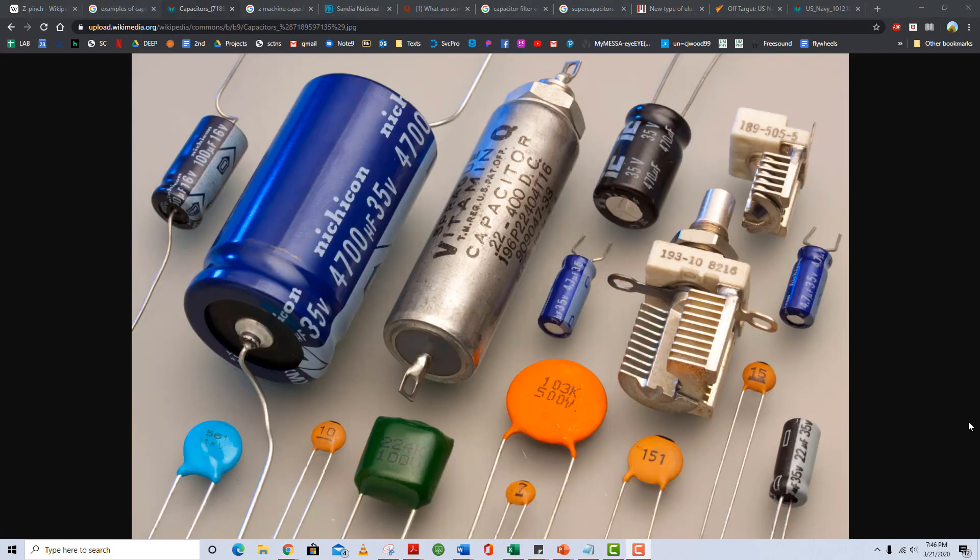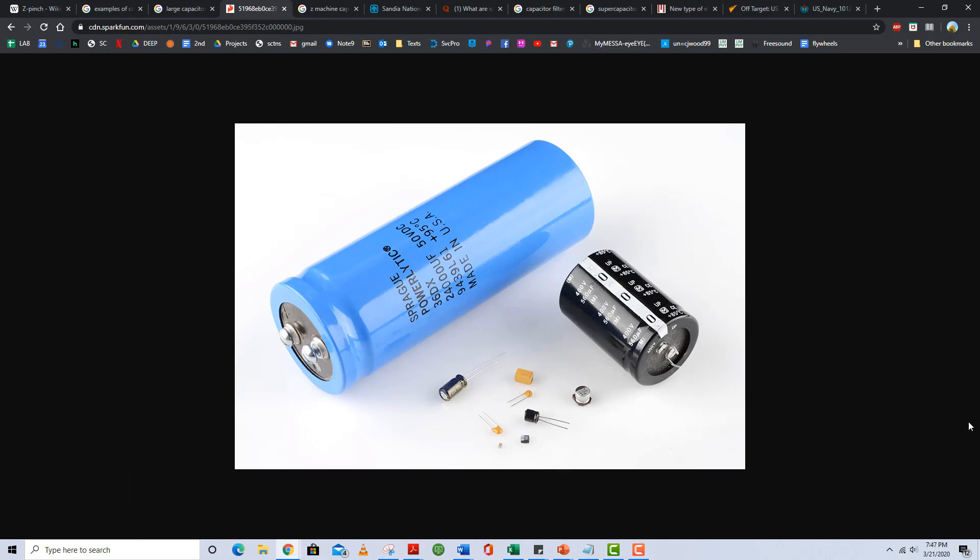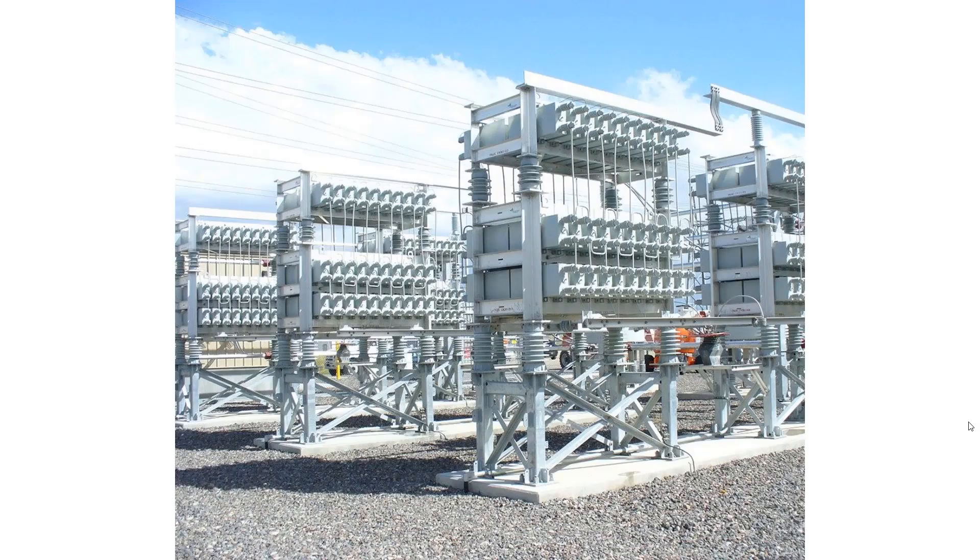Capacitors come in many shapes and sizes and types and they're made from a lot of different kinds of materials. These are all relatively small capacitors. Here you see some larger capacitors. And again, here's a bank of capacitors at a power transmission substation.